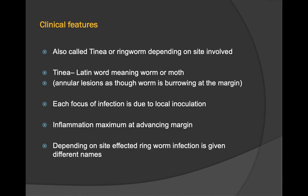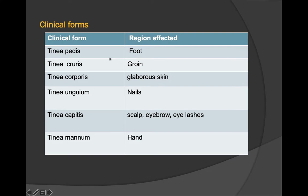Ringworm infections are named by the site affected: tinea pedis affects the foot; tinea cruris affects the groin; tinea corporis affects glabrous skin; tinea unguium affects the nails; tinea capitis affects the scalp, eyebrows, and eyelashes; and tinea manuum involves the hand.